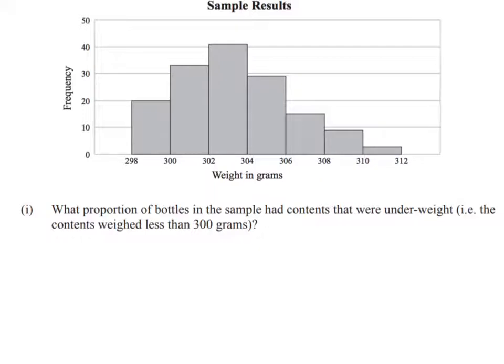And they're asking us what proportion of bottles had contents that were underweight, and reminding us that underweight means less than 300 grams. So what we want to do is we want to find where's our 300. So there's our 300, and we're talking about less than 300. So we're talking about all of the values below 300, and in which case that has a frequency of 20.